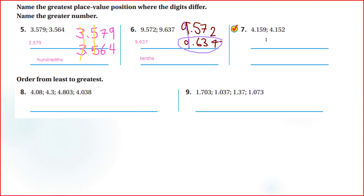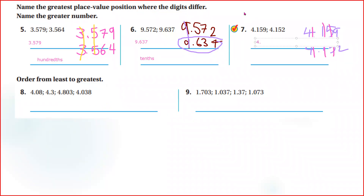Number seven, Dina — here we have 4.159 and 4.152. Bravo. Thank you.